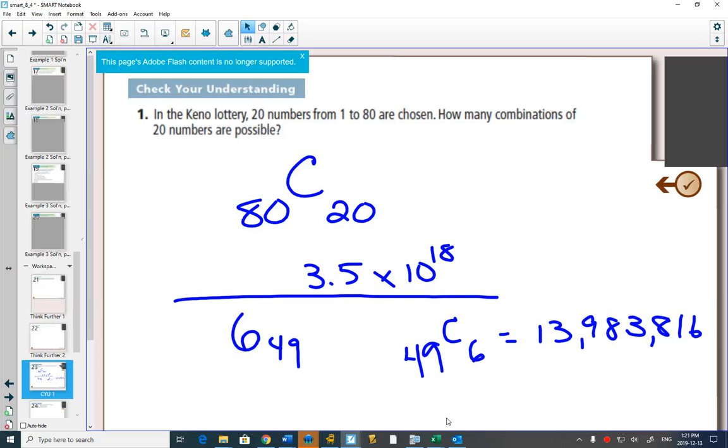And Lotto 649, like sometimes the prizes get pretty big. You see the billboards. They say it's at $35 million. It's at $45 million.